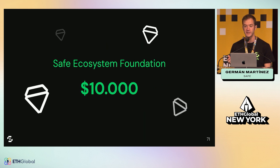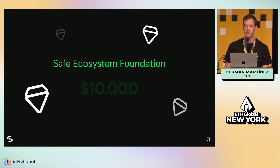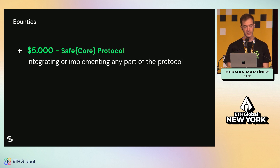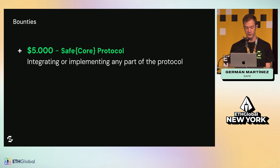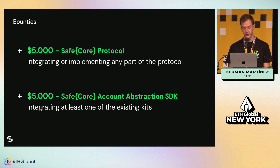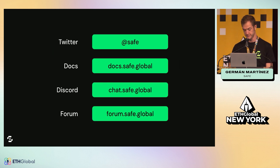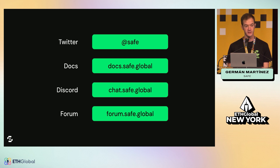The Safe Ecosystem Foundation has $10,000 up for grabs for hackers participating. We have split this into $5k in total for the three best projects building on top of the Safe Core Protocol — integrating or implementing any part of it — and $5k in total for the three best projects working on the Safe Core account abstraction SDK, integrating at least one of the existing kits we have. You can find us on Twitter at Safe. We have docs, Discord, and a forum.